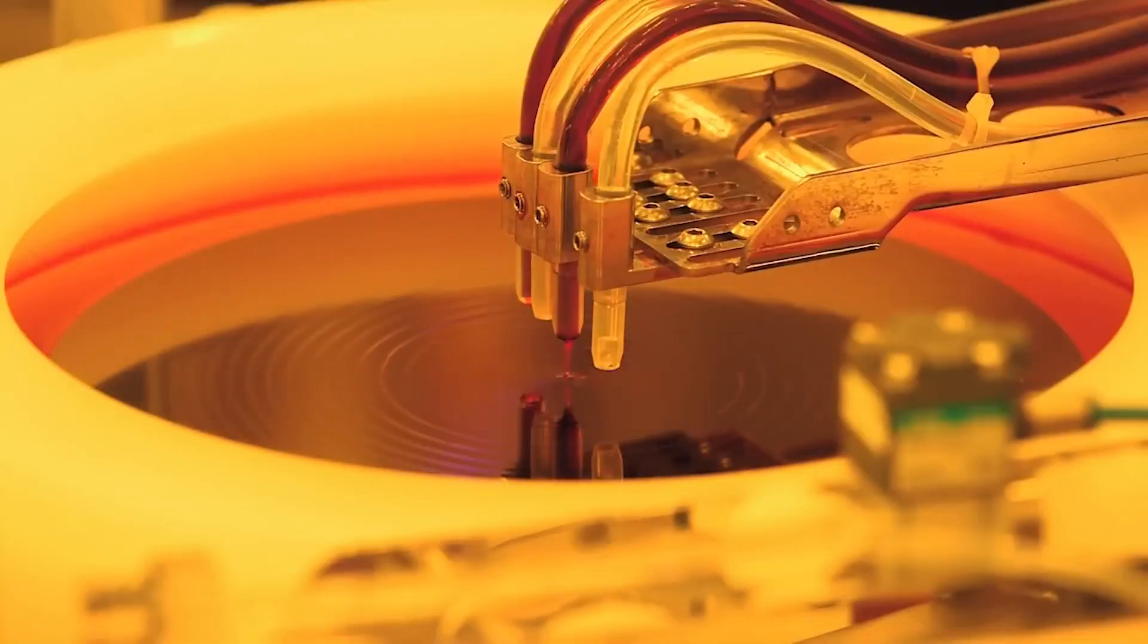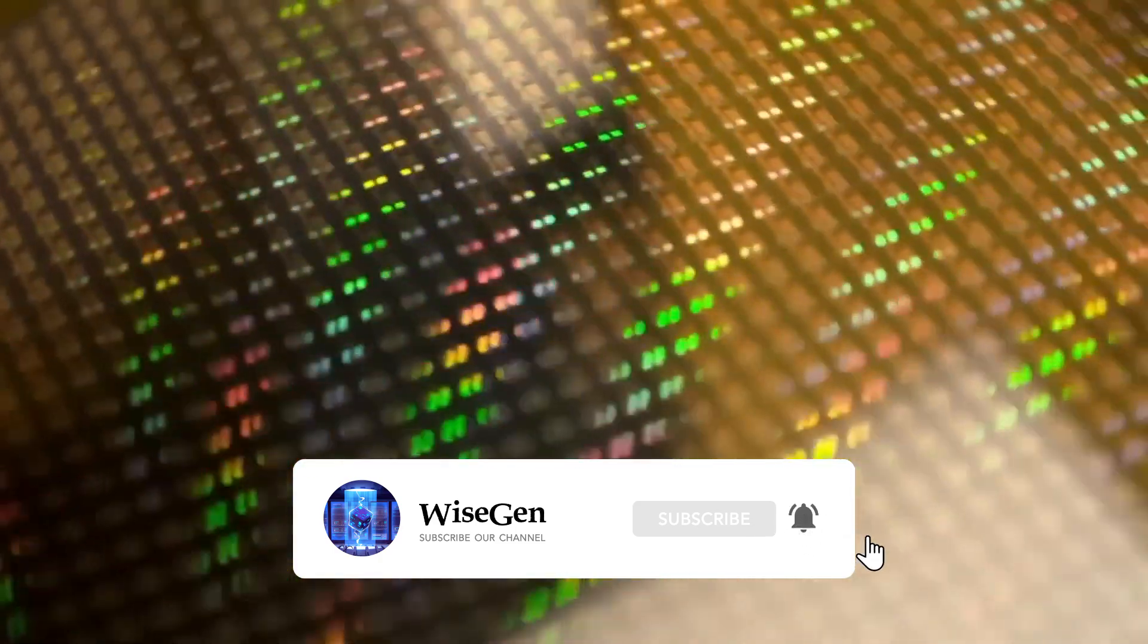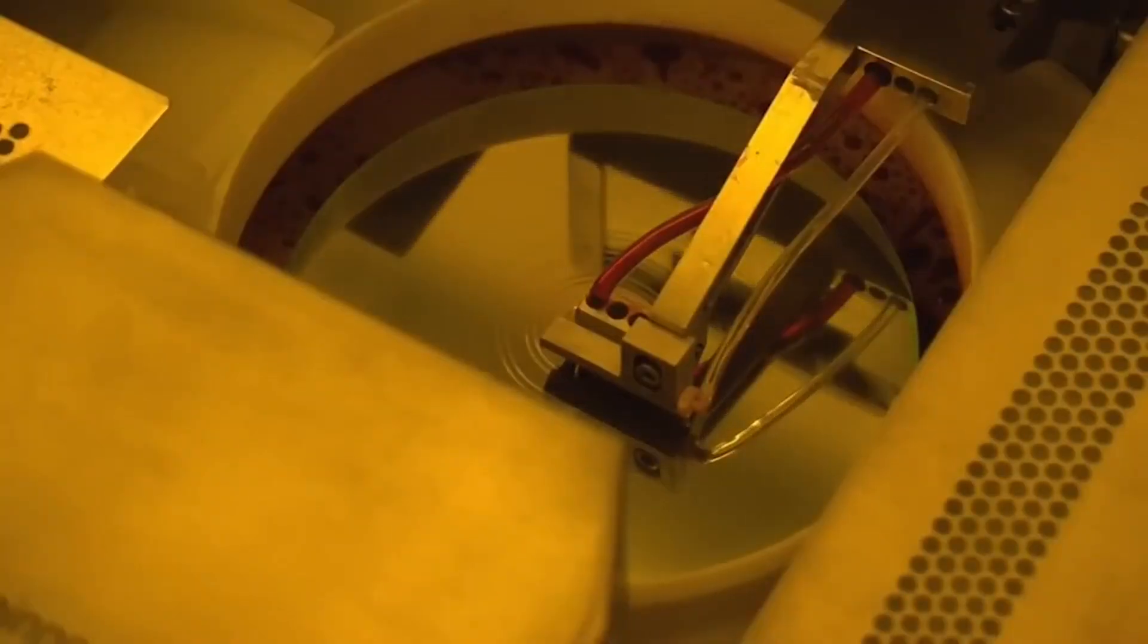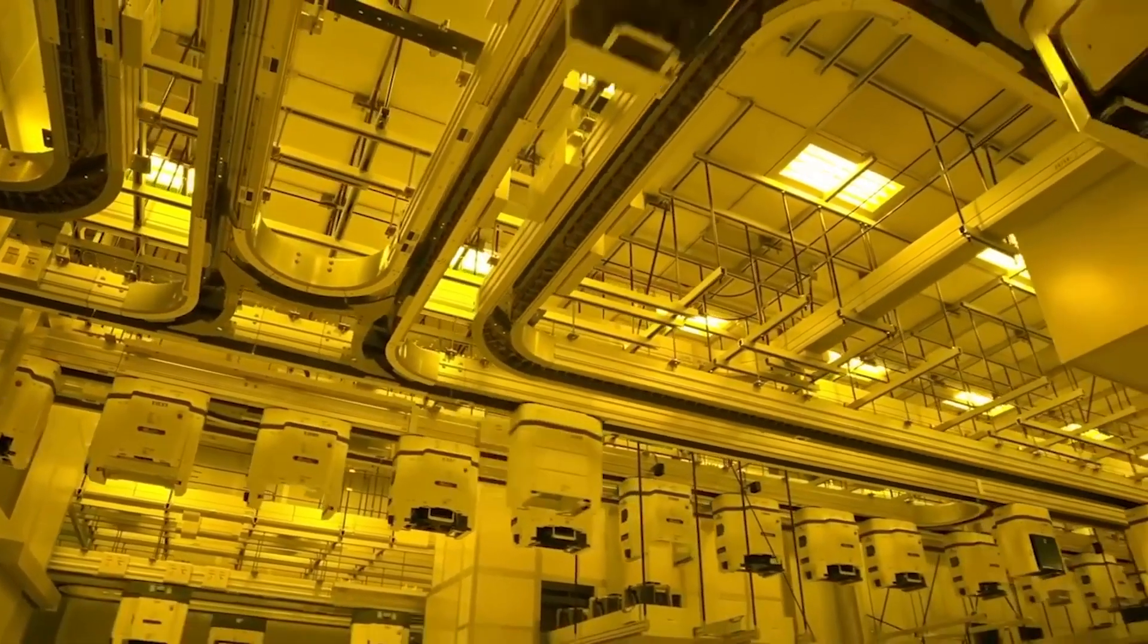Before entering the machine, each wafer is coated with a light reactive liquid. This is called photoresist and reacts to light like camera film in a darkroom. The photoresist is a very light-sensitive chemical agent, which is why this room has yellow light.